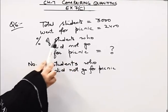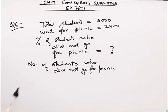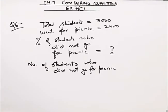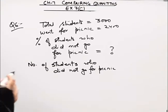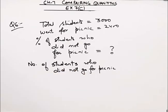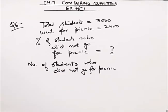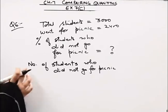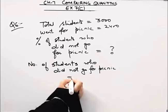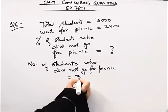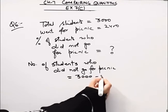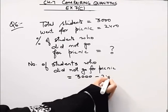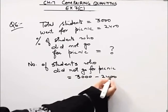We have to find out the percentage of students who did not go for the picnic. First of all, we will find out the number of students who did not go for the picnic. This will be the total students minus the students who went for the picnic.